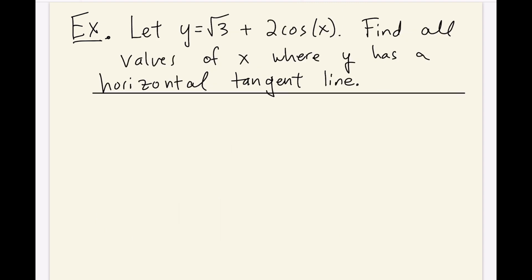So I wanted to do one more example I thought might help you out with the homework. In this question, y is equal to root 3 times x plus 2 times cos(x). And we want to find all the values of x where y has a horizontal tangent line. So we know that if we have a horizontal tangent line, we know that that means that f'(x) will be equal to 0 because this is the slope of the tangent line. And if the tangent line is horizontal, its slope is 0.